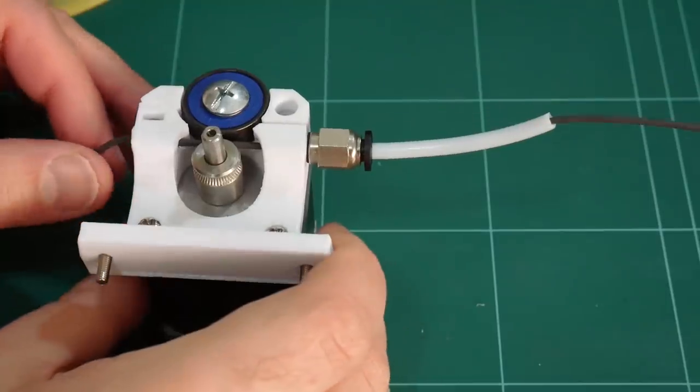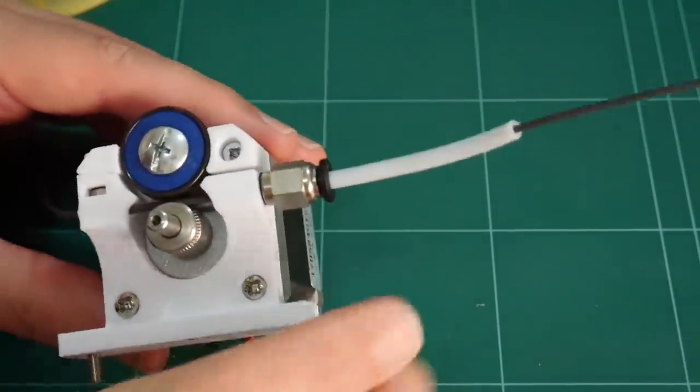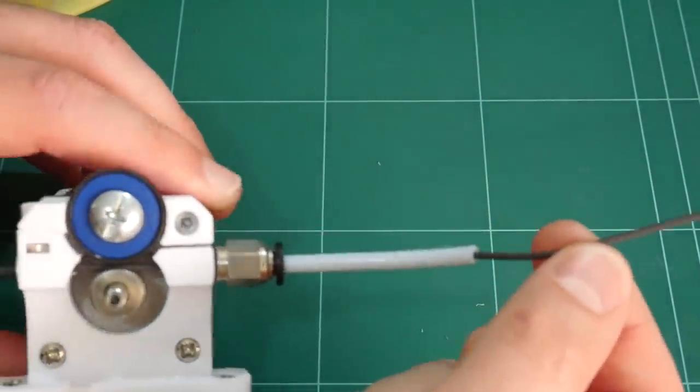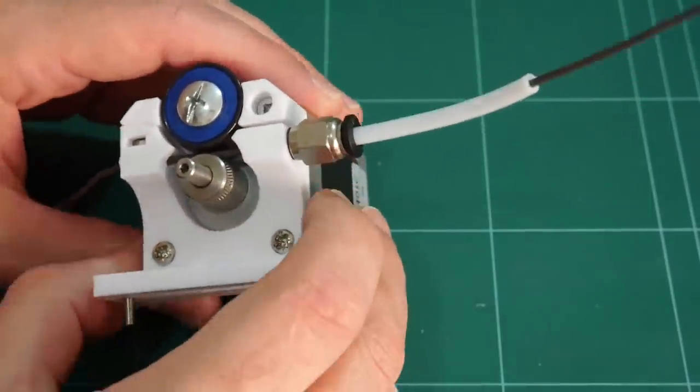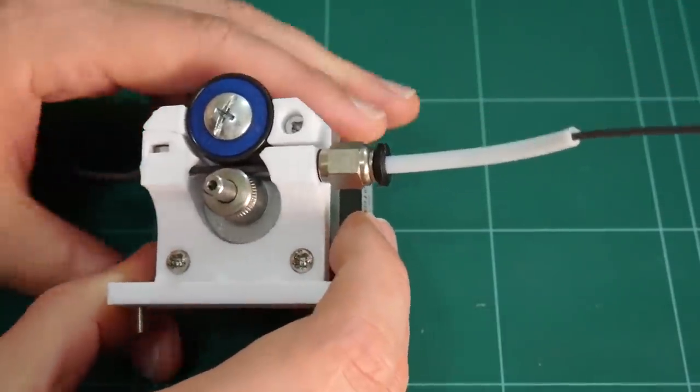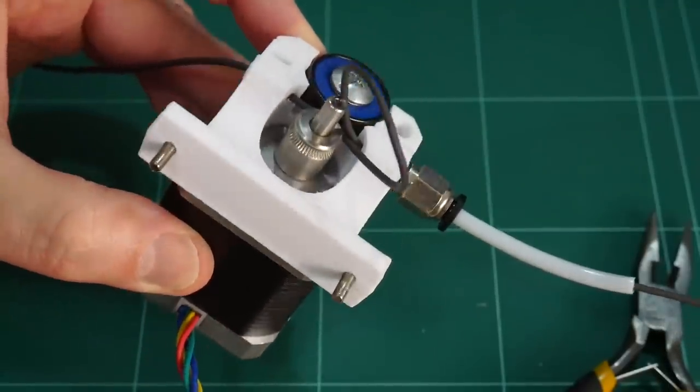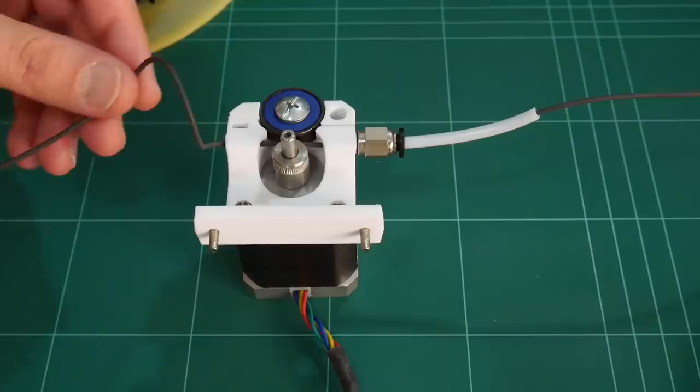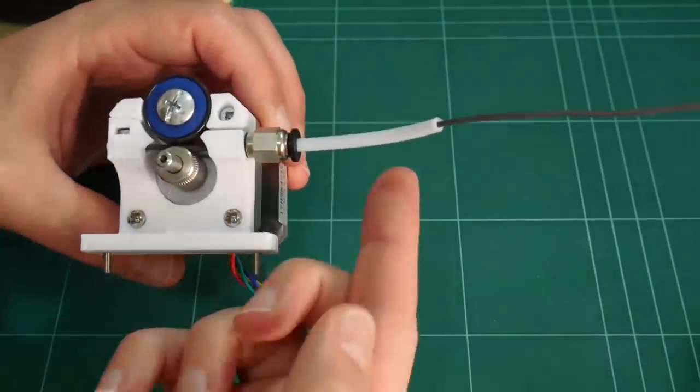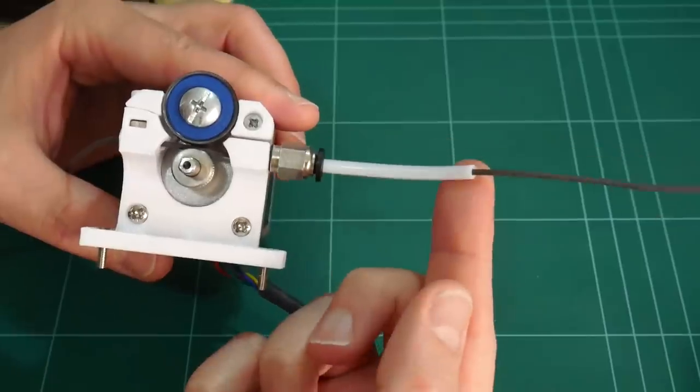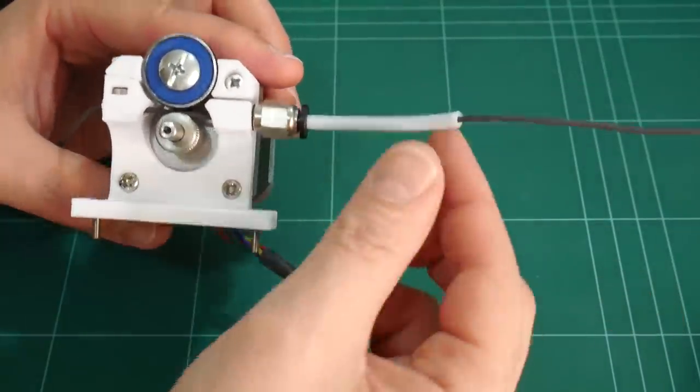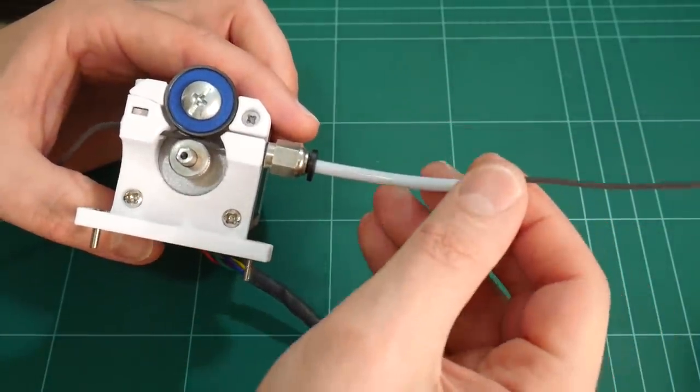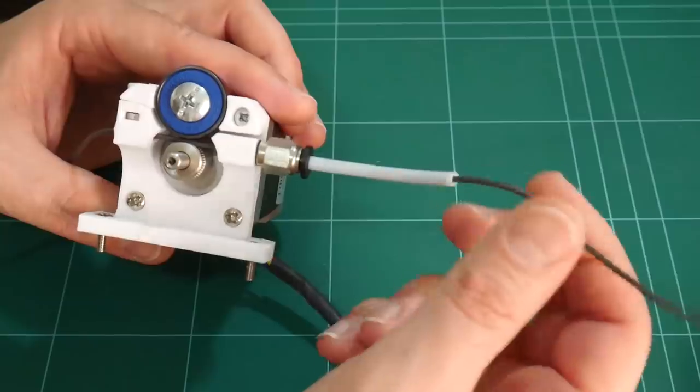The stretchy nature of TPE filament makes it quite a challenge for a Bowden drive to push this filament through a foot or more of Teflon tubing. In fact, it's not uncommon for the TPE filament to get bound up and stuck around the drive gear. There's a couple of things we can do to increase our chances of success. The first thing is the length of the Teflon tube between the Bowden drive and your hotend. If it doesn't need to be as long as yours currently is, reduce that length. That should reduce the amount of friction that the filament is exposed to.